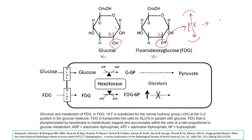Glucose and FDG are taken up by cells in the same way. Glucose, being a hydrophilic molecule, cannot penetrate the lipid bilayer. Instead, cells express glucose transporting proteins — GLUT transporters — which transport glucose from outside to inside the cell. Once inside, glucose is acted on by a series of enzymes to derive energy. Similarly, FDG enters the cell via the same GLUT transporters because these proteins cannot differentiate between glucose and FDG.